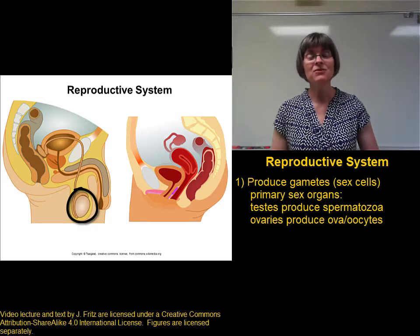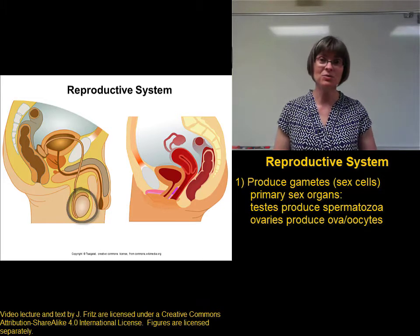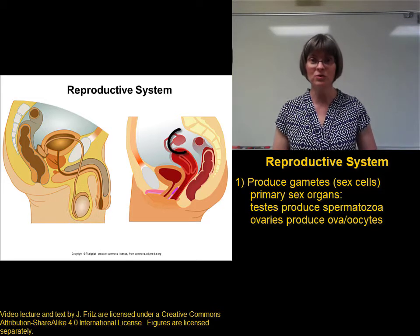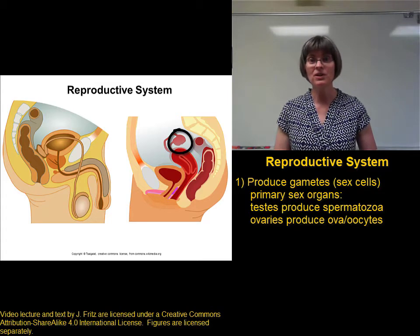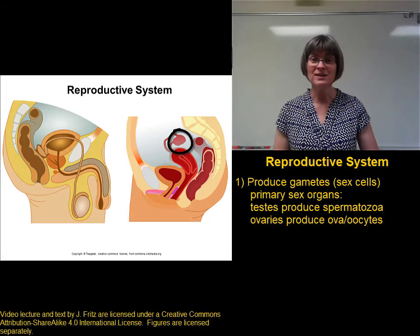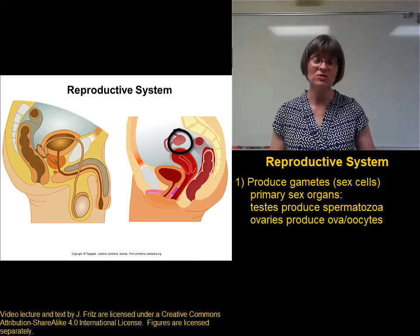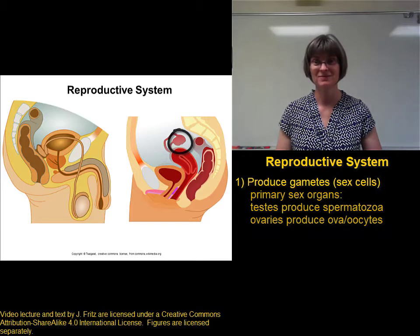In females, the primary sex organ is the ovary. The ovary is where we find the process of oogenesis, which is the process that produces the oocytes, also known as ova, or eggs.